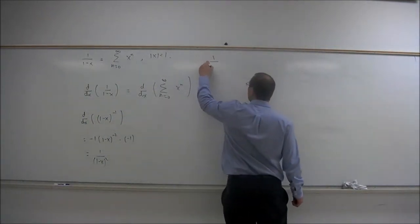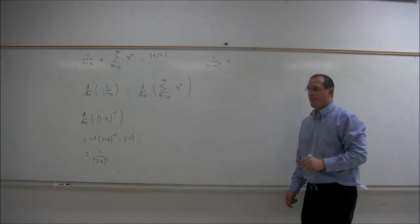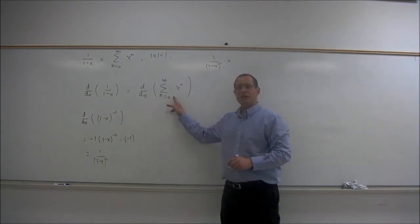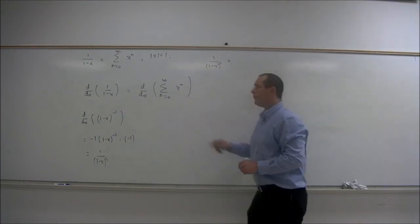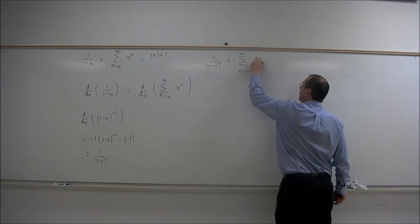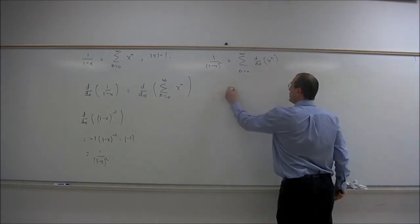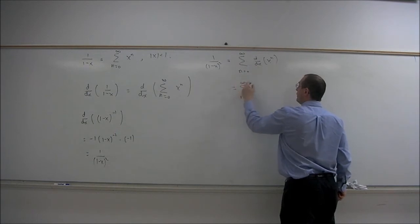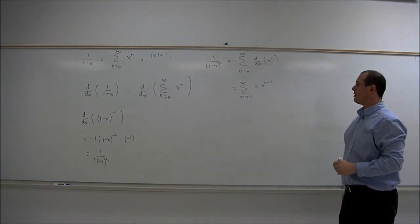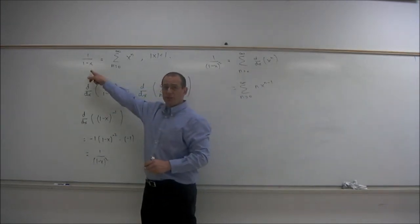So 1 over 1 minus x quantity squared — the power series representation for that will be given by the derivative of this power series on the right side of that equation. To differentiate a power series, you can move the derivative inside; in other words, you can differentiate term by term. This becomes the summation n equals 0 to infinity of n times x to the n minus 1, using the power rule on each term.